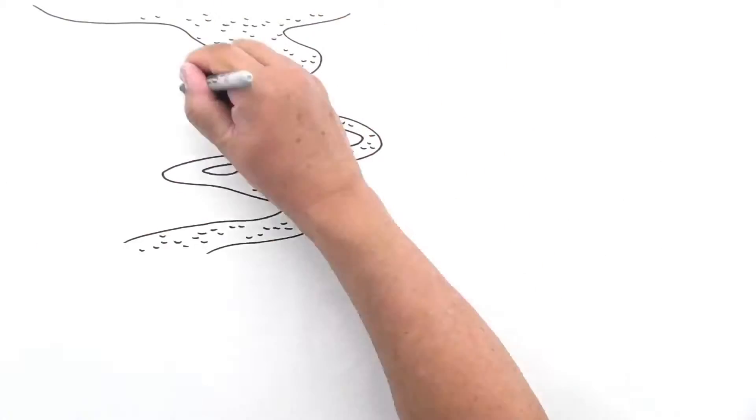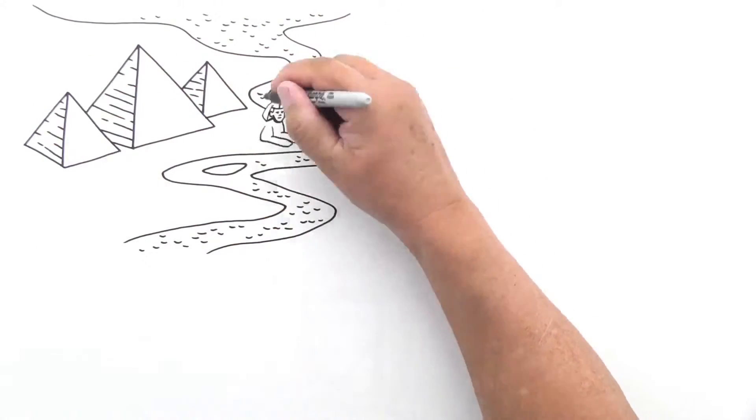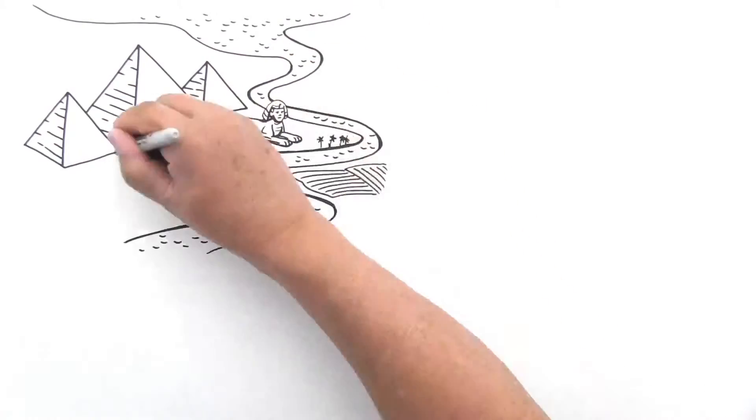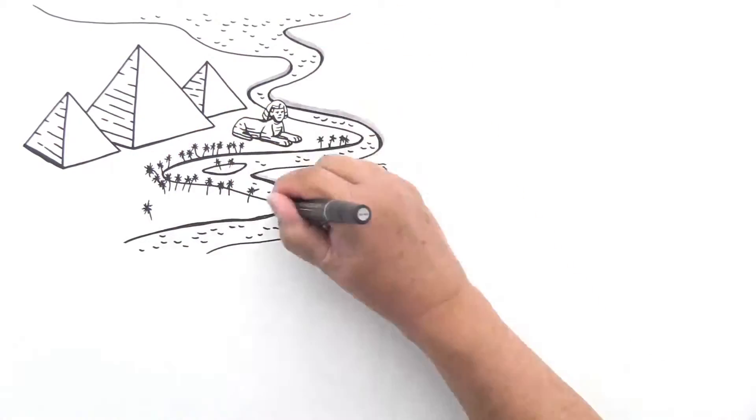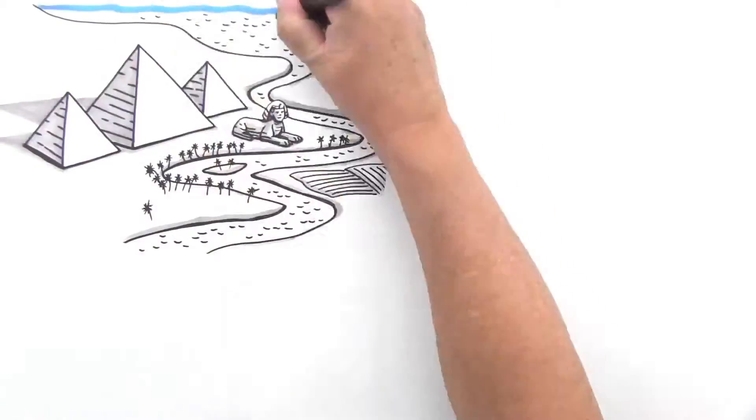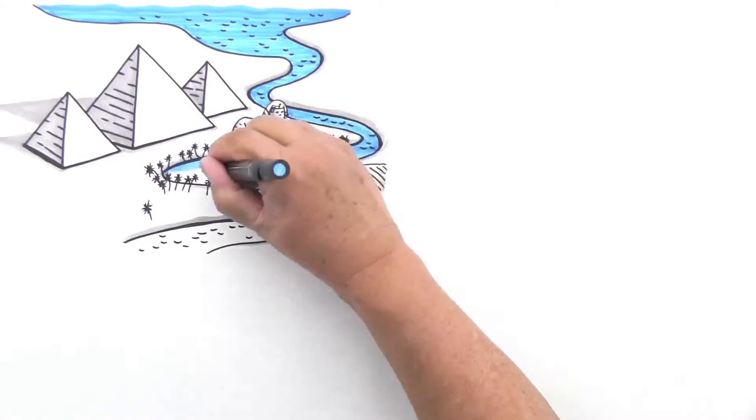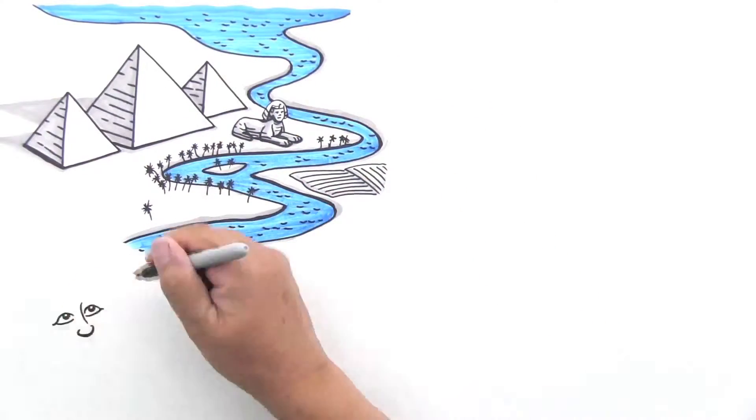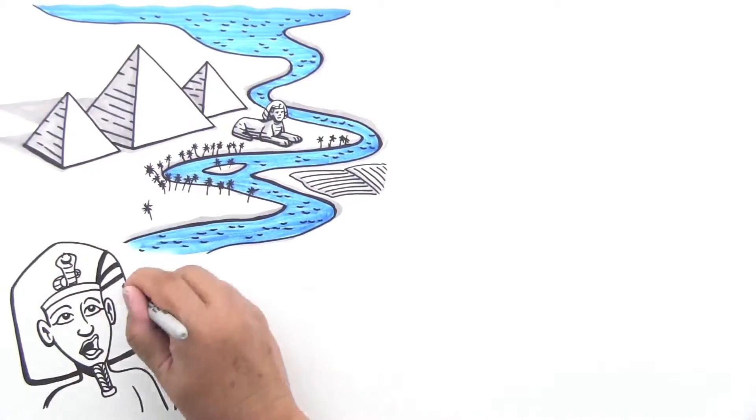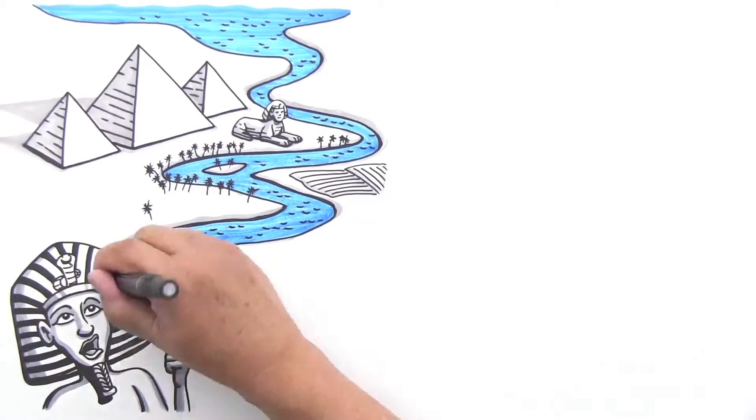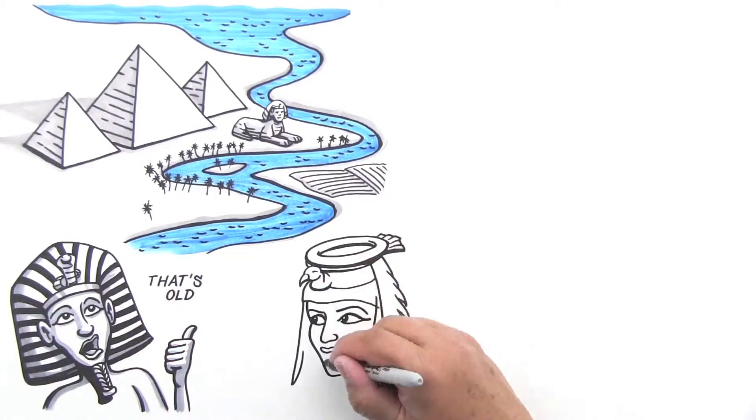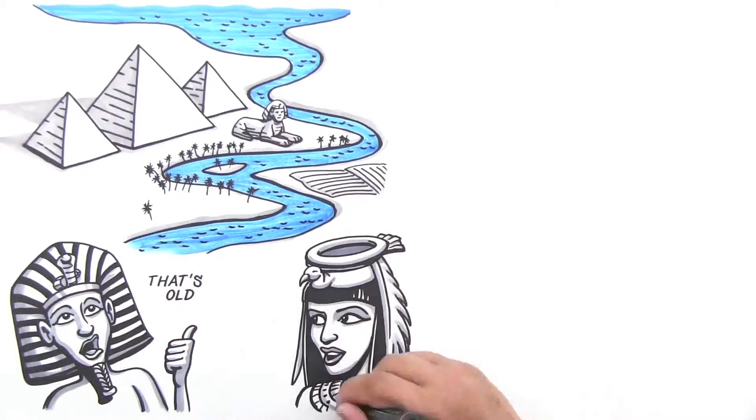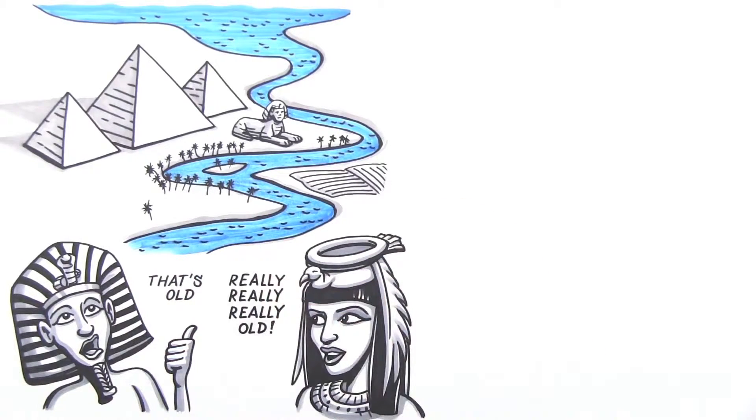Mesopotamia may have started the civilization craze, but Egypt took it to a new standard. Egypt depended on one great river, the Nile, and developed a civilization that lasted over 3,000 years. When Tutankhamen became Pharaoh, the great pyramids were already 1,000 years old, and it was another 1,000 years after that when Cleopatra held power.